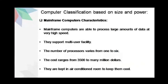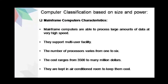The third category of computer classification based on size and power is the mainframe computers. Mainframe computers are able to process large amounts of data at very high speed. These computers support multi-user facility and the number of processors varies from 1 to 6. The cost for the mainframe computers ranges from 3500 to many million dollars. Mostly, mainframe computers are kept in an air-conditioned room to keep them cool.